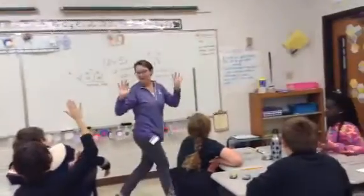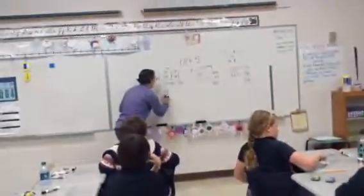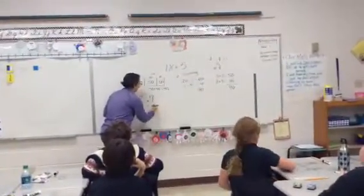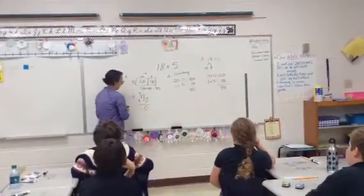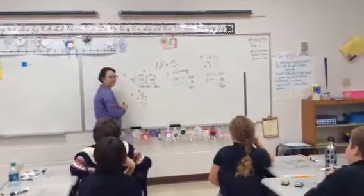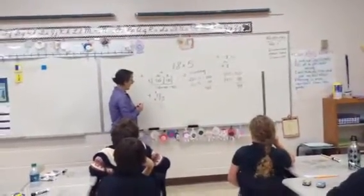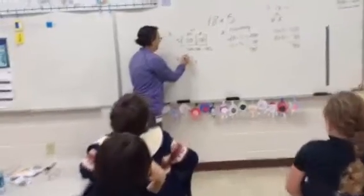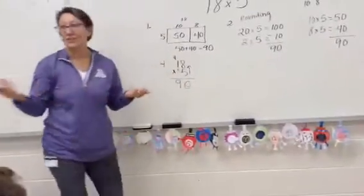We got any more ways to do this? Jonathan, go ahead. I just did it the traditional way. I did 18 times 5. First you go and do 5 times 8, which equals 40. So you put the 4 over the 1 and put the 0 under the 5. And then you go the other way diagonally — 5 times 1 is 5, plus 4, which is 9. That's a traditional algorithm.